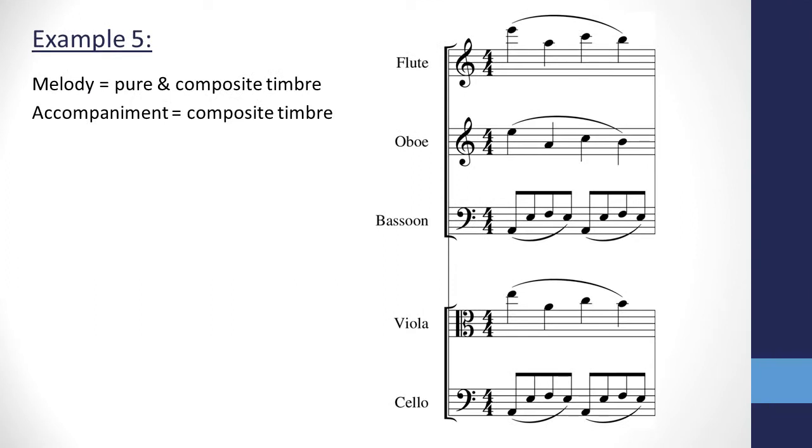Here all parts are once again doubled in unison, as in example four, except this time we've introduced an octave doubling by having the flute play the melody an octave higher than the oboe and viola.